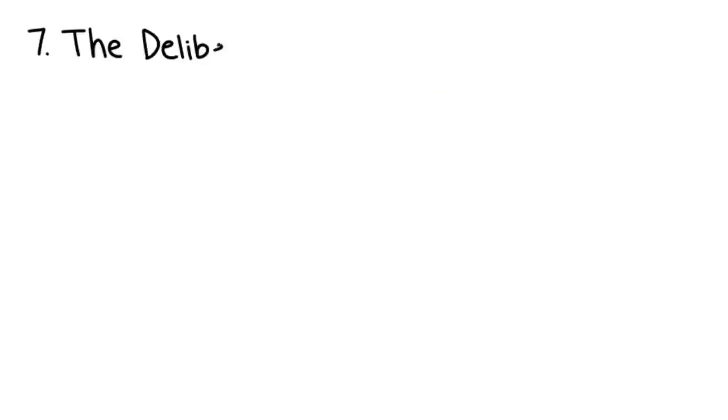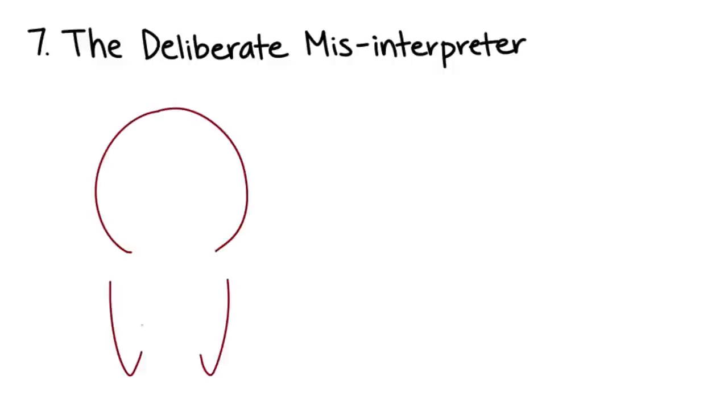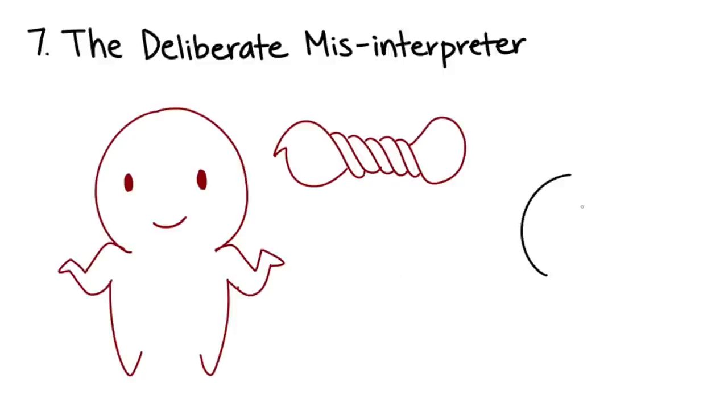Number 7: The Deliberate Misinterpreter. This person seems nice, but they twist and use your words. This person spreads misinformation and misinterprets you, deliberately presenting you in a false, negative way.